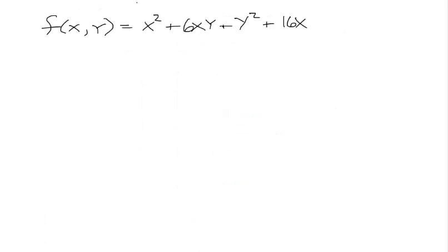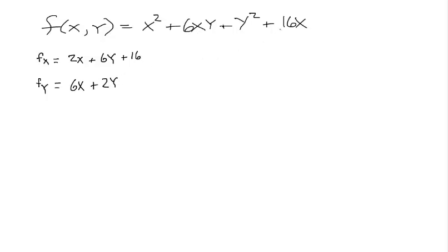Let's take a look at an example. We have f(x,y) = x² + 6xy + y² + 16x. The first thing we do is take the first-order partial with respect to x and the first-order partial with respect to y. With respect to x, we get 2x + 6y + 16. With respect to y, we get 6x + 2y.